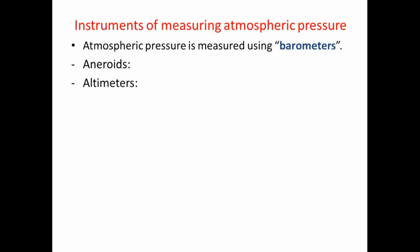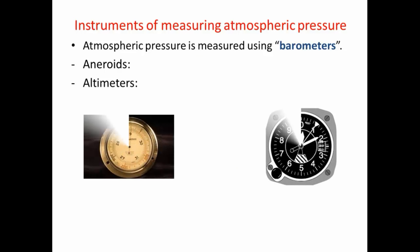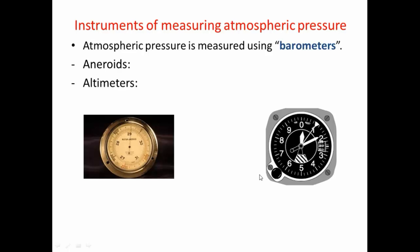Instruments used to measure atmospheric pressure are called barometers, and there are some types like aneroids and altimeters, which have other functions. For example, aneroids are used for determining the day's weather depending on atmospheric pressure. Altimeters are used to measure elevation above sea level in airplanes, depending also on atmospheric pressure.